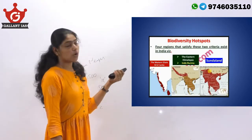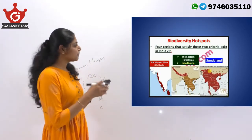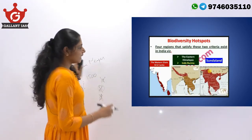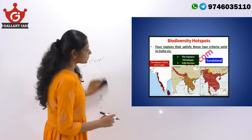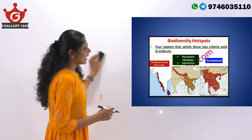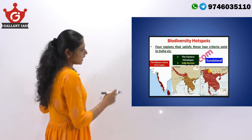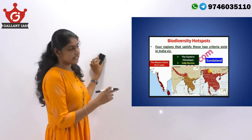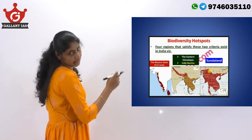These are the biodiversity hotspots present in India: the Western Ghats, the Eastern Himalayas, the Indo-Burma region, and the Sundaland.